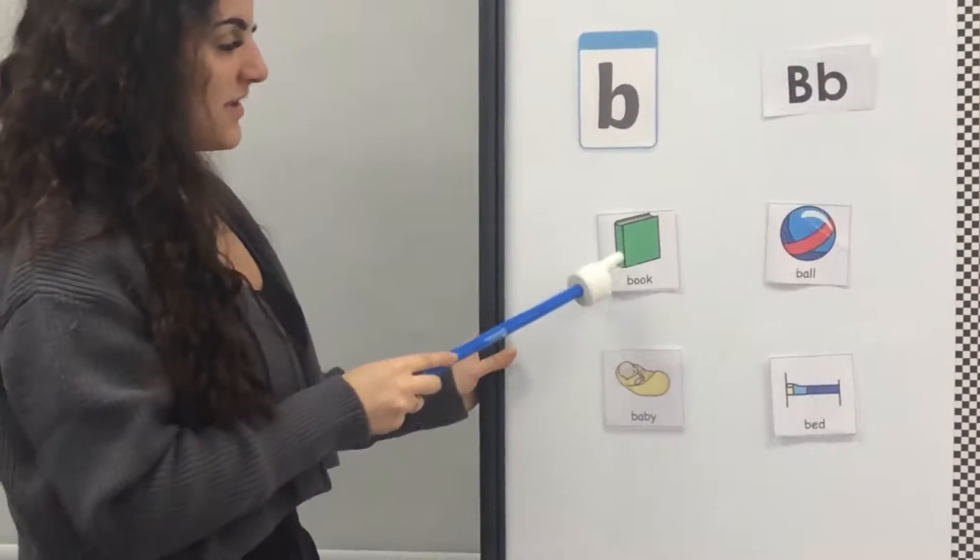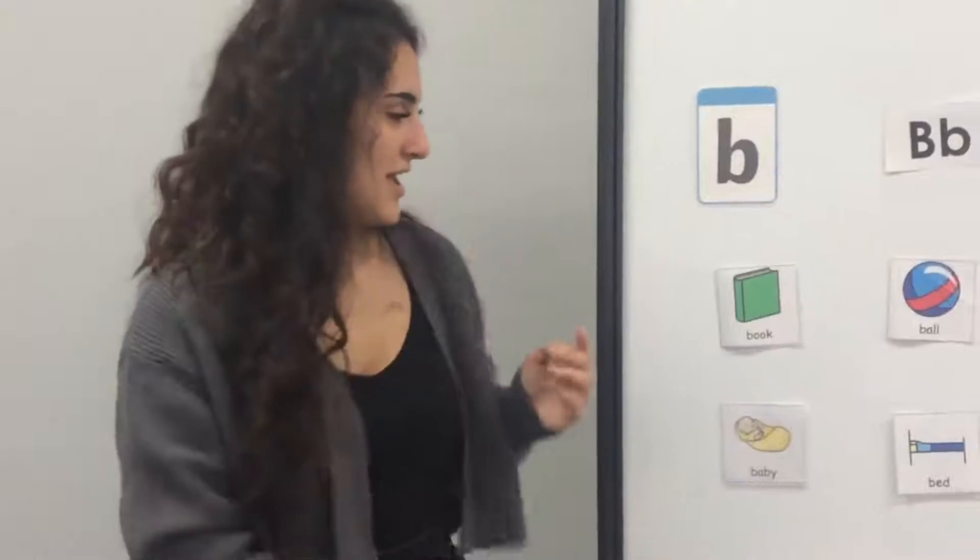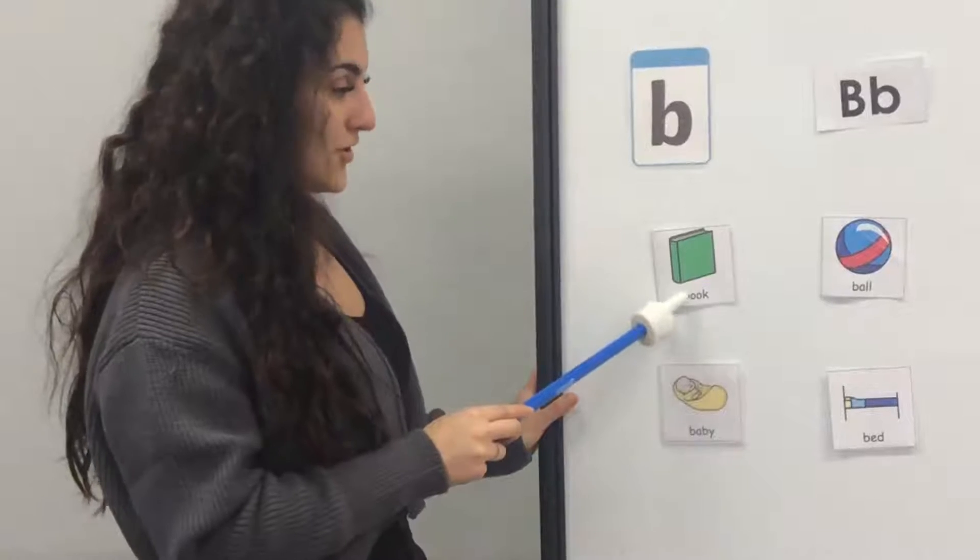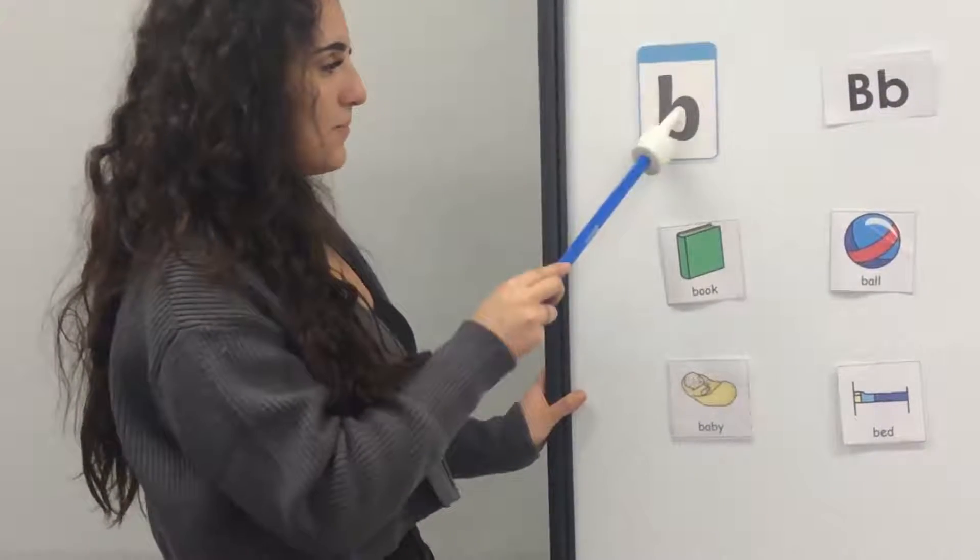I've got B for book. Can we all sign book? And here I've got the picture and the word for book. And book begins with the letter B.